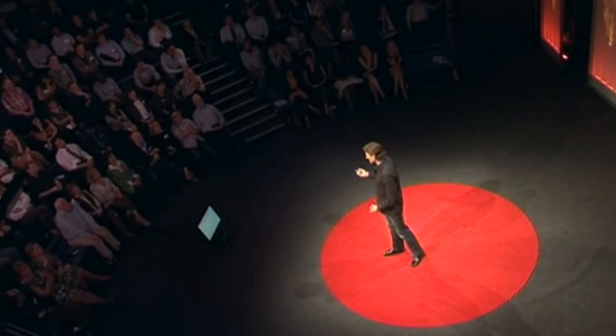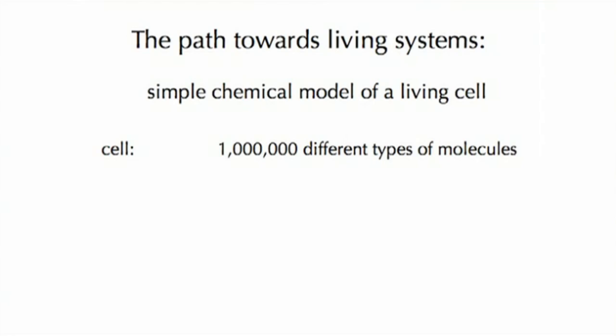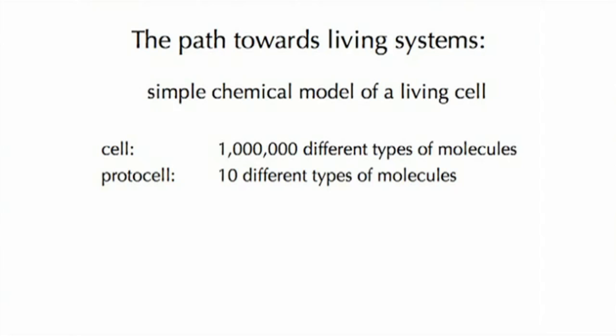So how do we do this? We use a model system called a protocell — think of this as a kind of primitive cell. It is a simple chemical model of a living cell. A cell in your body may have on the order of millions of different types of molecules that need to come together in a complex network to produce something we call alive. In the laboratory, we want to do much the same but with on the order of tens of different types of molecules — a drastic reduction in complexity, but still trying to produce something that looks lifelike.